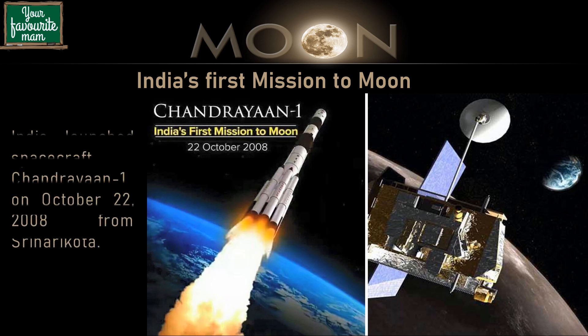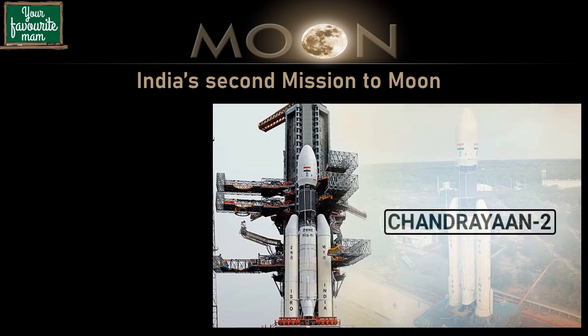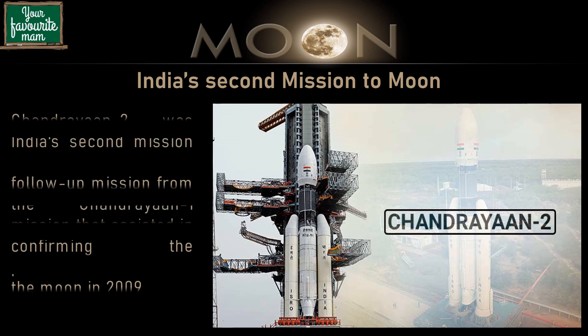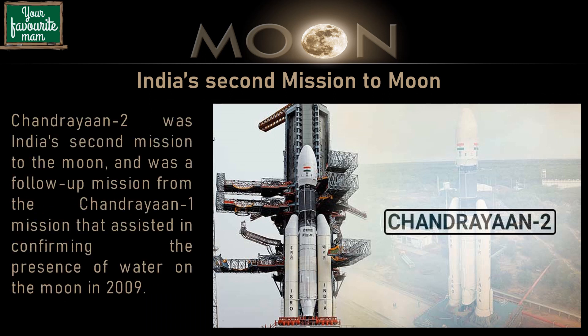India's first mission to the moon was launched by a spacecraft named Chandrayaan-1 on October 22, 2008 from Shri Harikota. India's second mission to the moon was Chandrayaan-2, a follow-up mission from Chandrayaan-1 that assisted in confirming the presence of water on the moon in 2009.